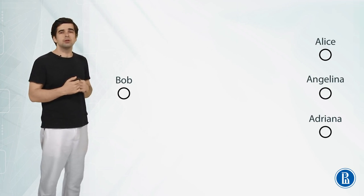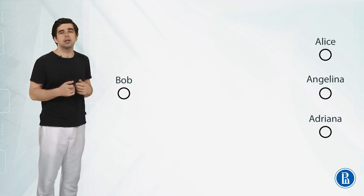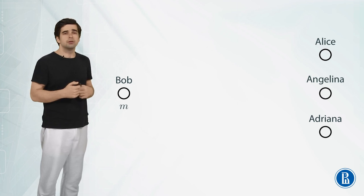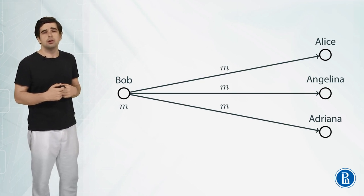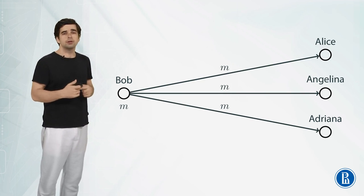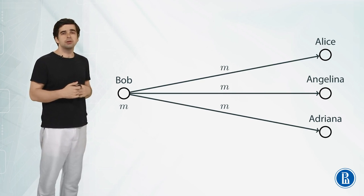So let's imagine that Bob wants to send the same message to Alice, Angelina and Adriana. So he has a message M and he wants to send this message to all three. But of course he doesn't want for anyone to listen and he wants to send this message as a secret.